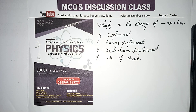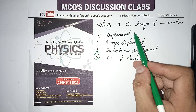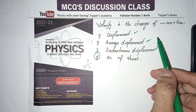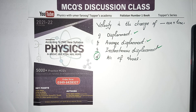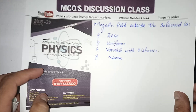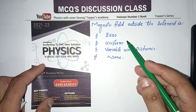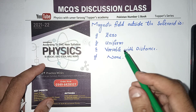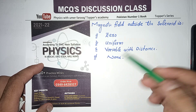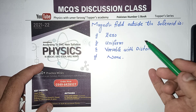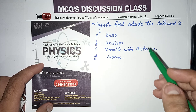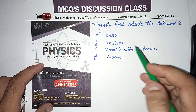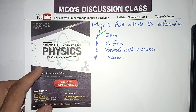Next MCQ: Velocity is the change of displacement — instantaneous displacement or instantaneous velocity. Regarding magnetic field outside the solenoid: it is zero. Inside the solenoid, the magnetic field is maximum. So option A is correct.